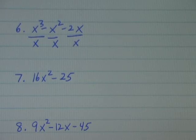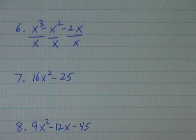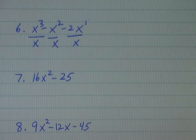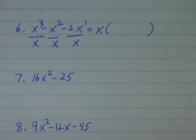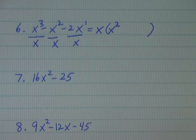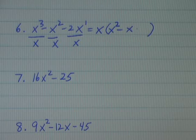Recall that the greatest common factor of a power is always the power raised to the smallest exponent, which is x to the first. So that's my greatest common factor. I'm going to factor out an x, so x is one of the factors. x to the third divided by x is x squared. x squared divided by x gives me x. And negative 2x divided by x gives me negative 2.